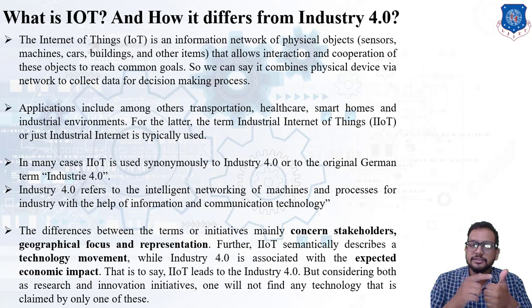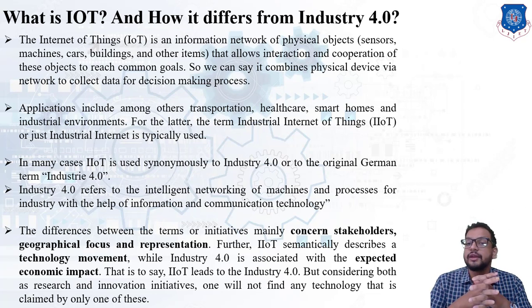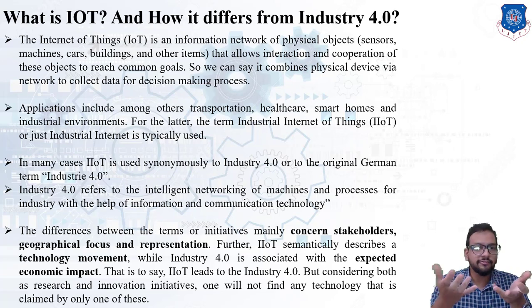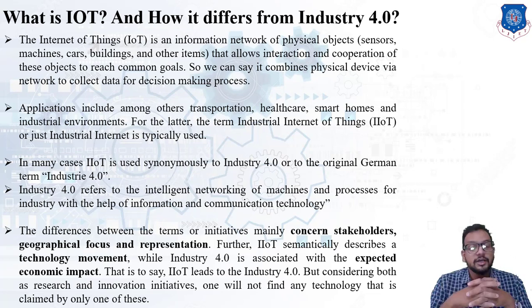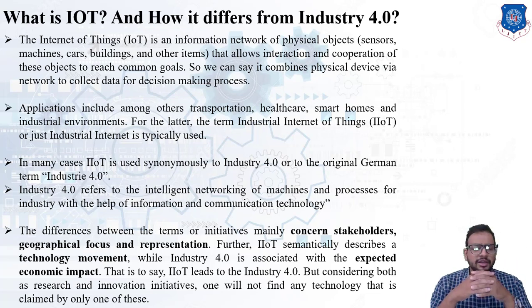Physical objects would be machines, cars, buildings, healthcare systems, hospitals. All of that allows interaction and cooperation of these objects to reach a common goal. The applications of IoT include smart transportation, healthcare systems, smart homes or smart buildings, and industrial environments. For the latter, the term Industrial Internet of Things or just Industrial Internet is typically used.